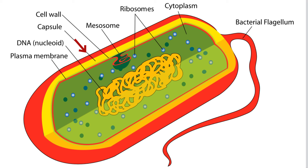A bacteria cell also has a cell wall and a cell membrane, which makes up the inner layer of this outer covering.